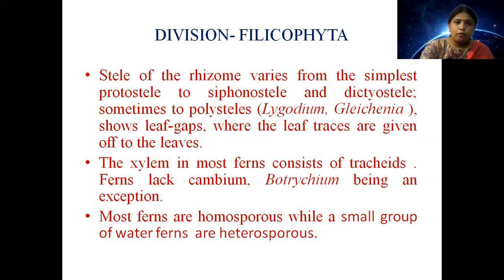Most ferns are homosporous while a small group of water ferns are heterosporous. In homosporous ferns there is no variation in spore size — all spores look alike and there is only one type of spore. While in some water ferns such as Marsilea, Salvinia, and Azolla, they are heterosporous, and two types of spores are found: microspore and megaspore, with variation in size and shape.